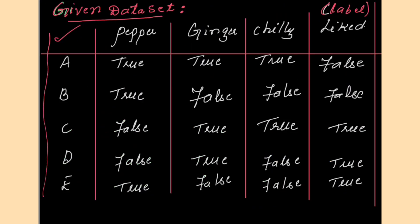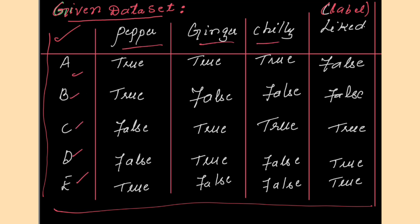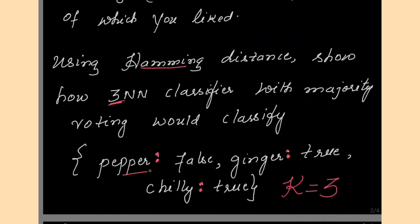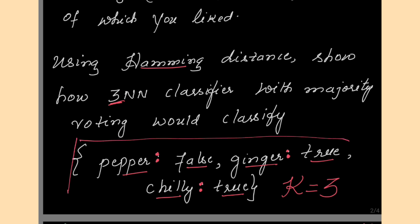A, B, C, D, E are the 5 days of the week. Pepper, ginger, chili are the flavors of the burger. In the problem statement, it is asked: use Hamming distance to show how a 3-NN classifier with majority voting would classify a test instance where pepper is false, ginger is true, chili is true. So this is your test instance, and K equals 3.